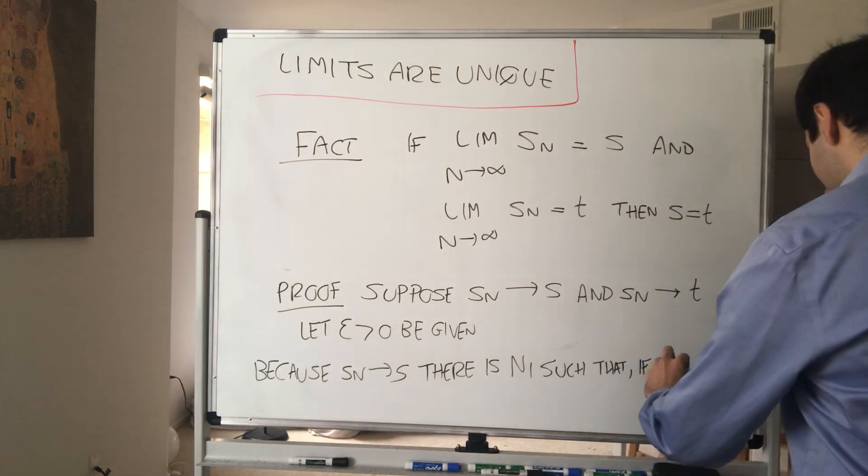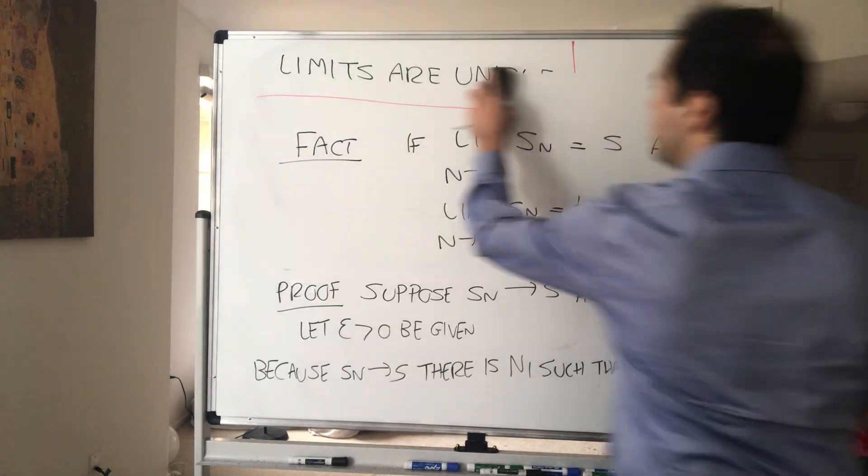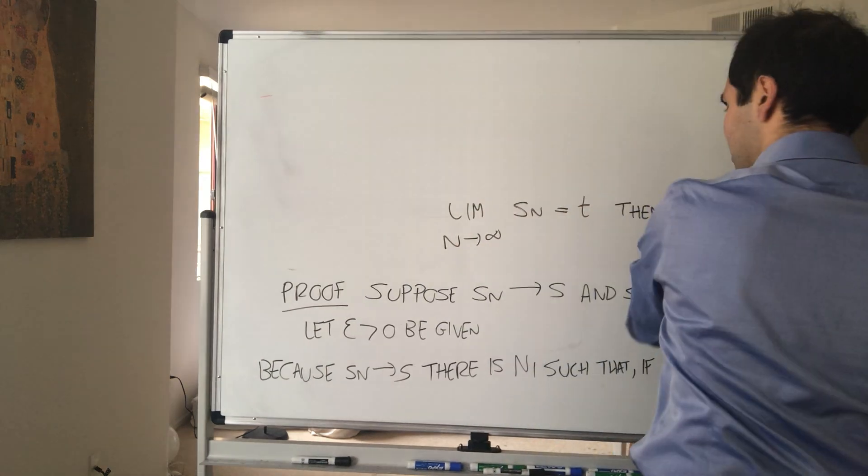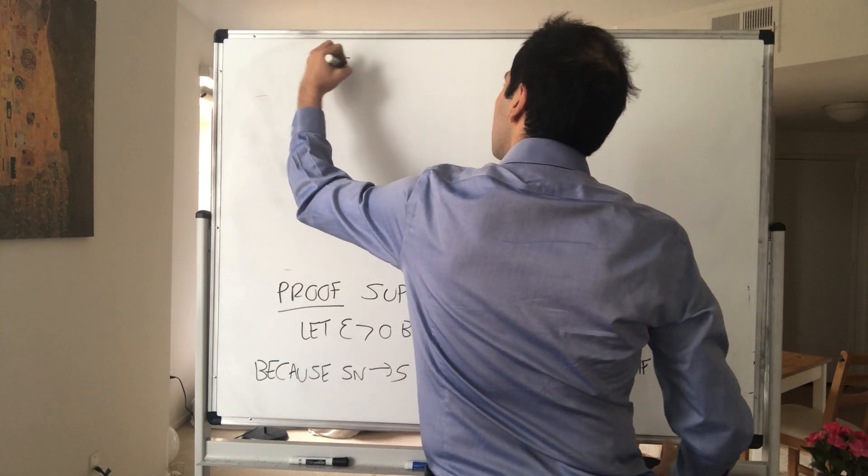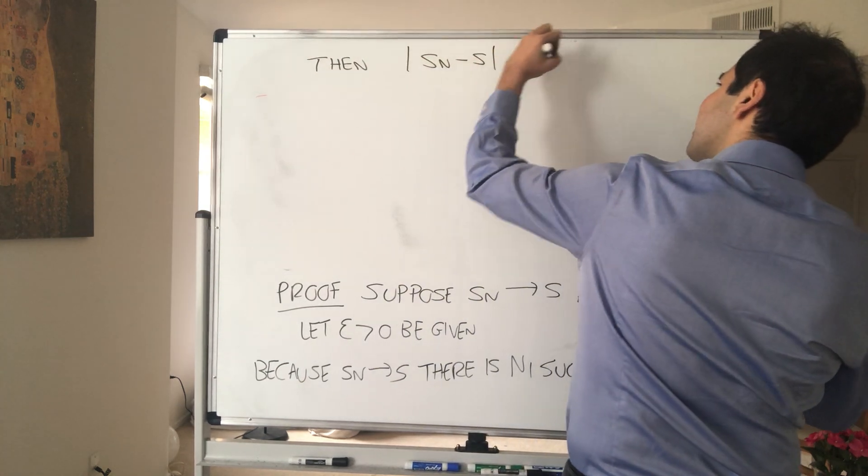if N is bigger than N1, then Sn is very close to S. Sn minus S is less than Epsilon.